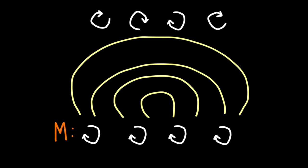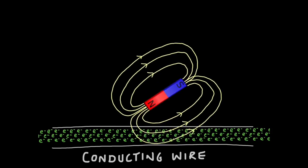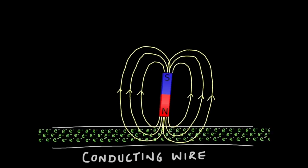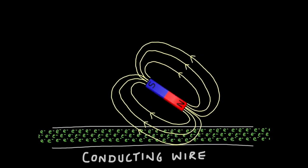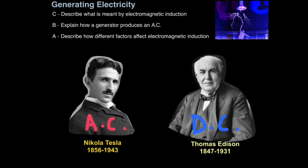You won't be tested on this, but I just thought it was quite interesting. The key thing to remember is that the different field lines for each pole of a magnet will cause the electrons to move one way and then the other way. That is electromagnetic induction, when the magnetic field induces a current in a wire. So now we can describe what is meant by electromagnetic induction.